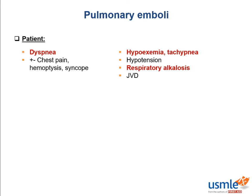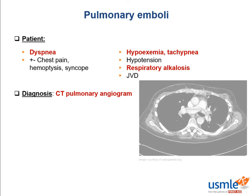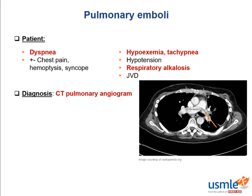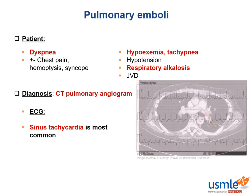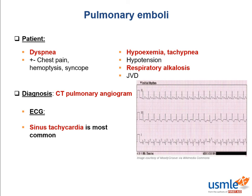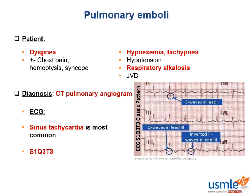The clinical workup of PE is complex, but key points include: diagnosis is made with a CT pulmonary angiogram, which can show a filling defect such as a saddle embolus in the main pulmonary trunk. The ECG usually only shows sinus tachycardia, but sometimes it shows the characteristic S1Q3T3 pattern — an S wave in lead 1, a Q wave in lead 3, and an inverted T wave in lead 3.